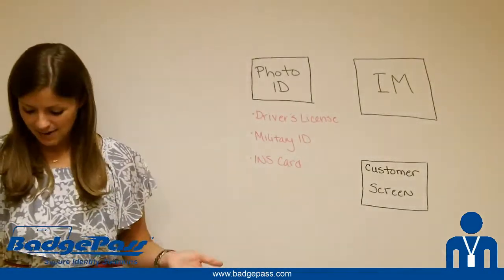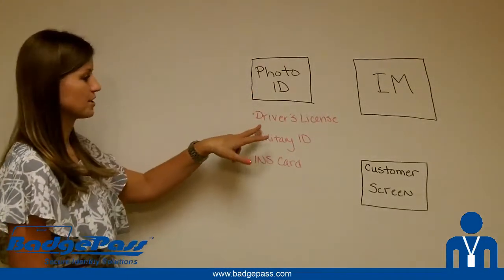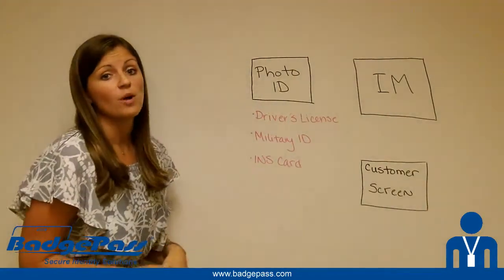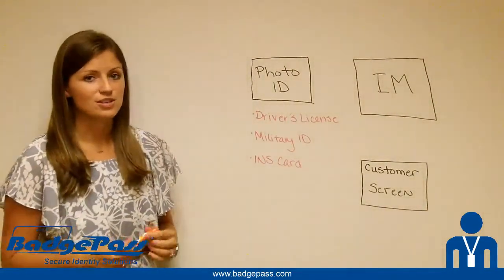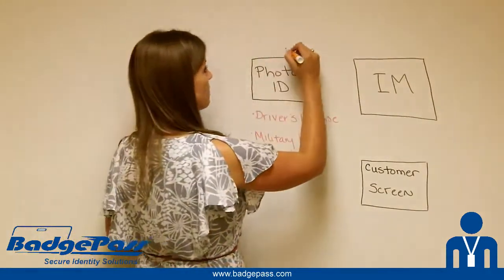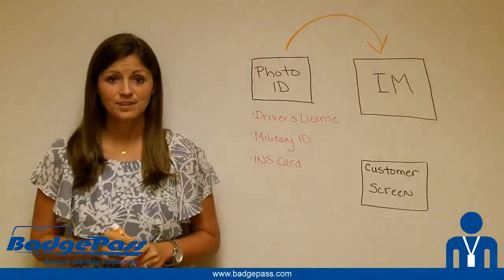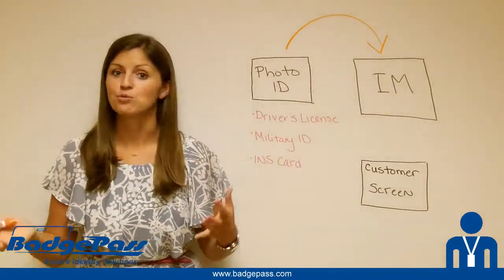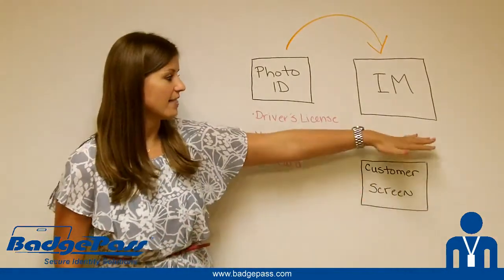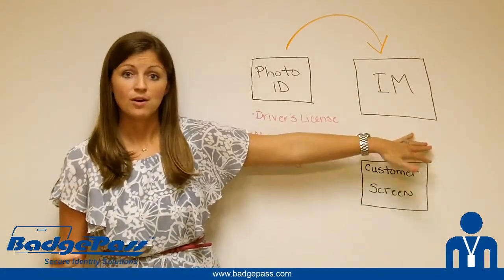So, this is kind of how the process works with Badge Pass. You're going to start with your photo ID — basically, the person's going to show up with a driver's license, military ID, or INS card. The Badge Pass driver's license reader allows you to capture the information stored in the barcode or MagStripe and automatically populate that data into Badge Pass Identity Manager. At that point, your customers can pretty much decide: capture a photo, print a photo ID, and move on.